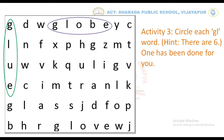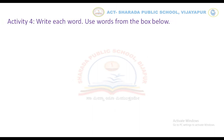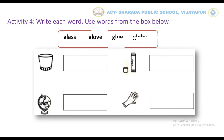Okay children, let us move to the next activity. That is, write each word. Use words from the box below. In this activity, first identify the given pictures, then find the right word in the given box, then write in the given boxes.